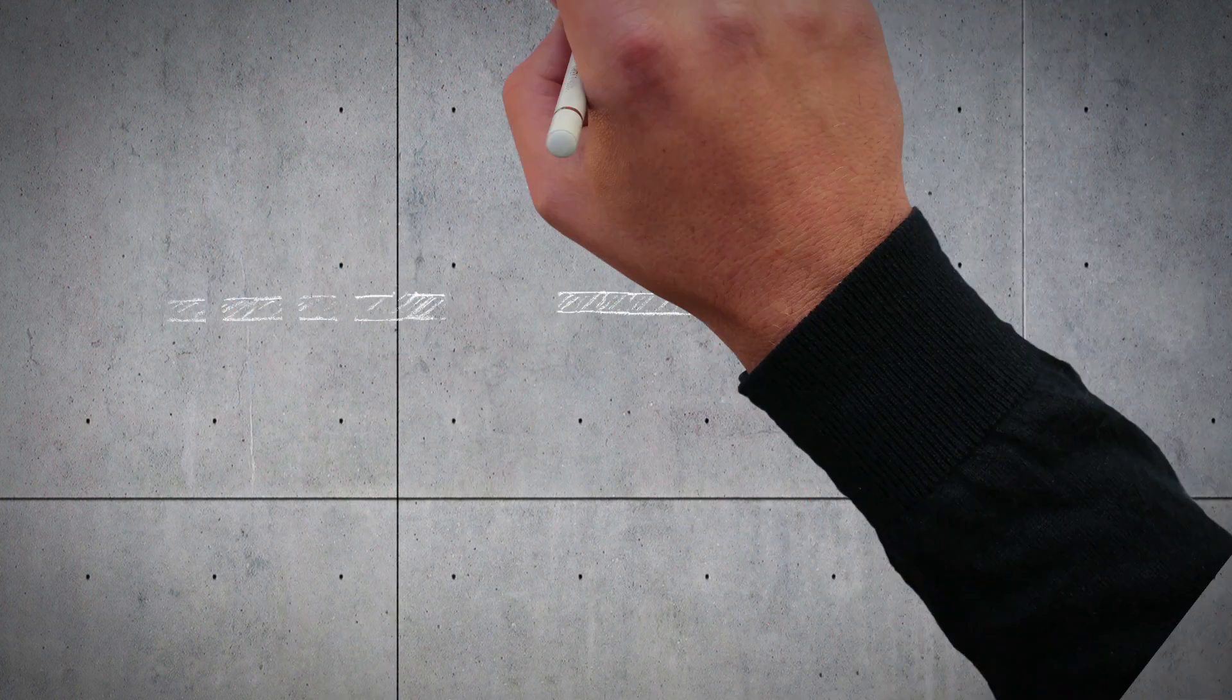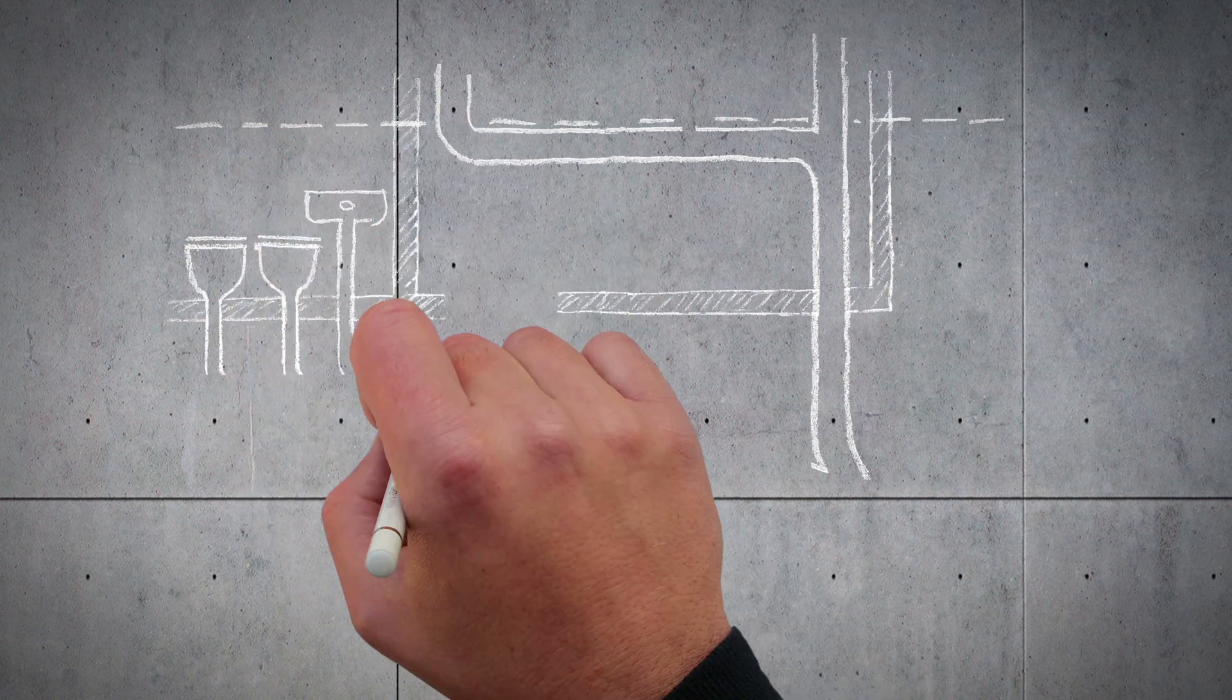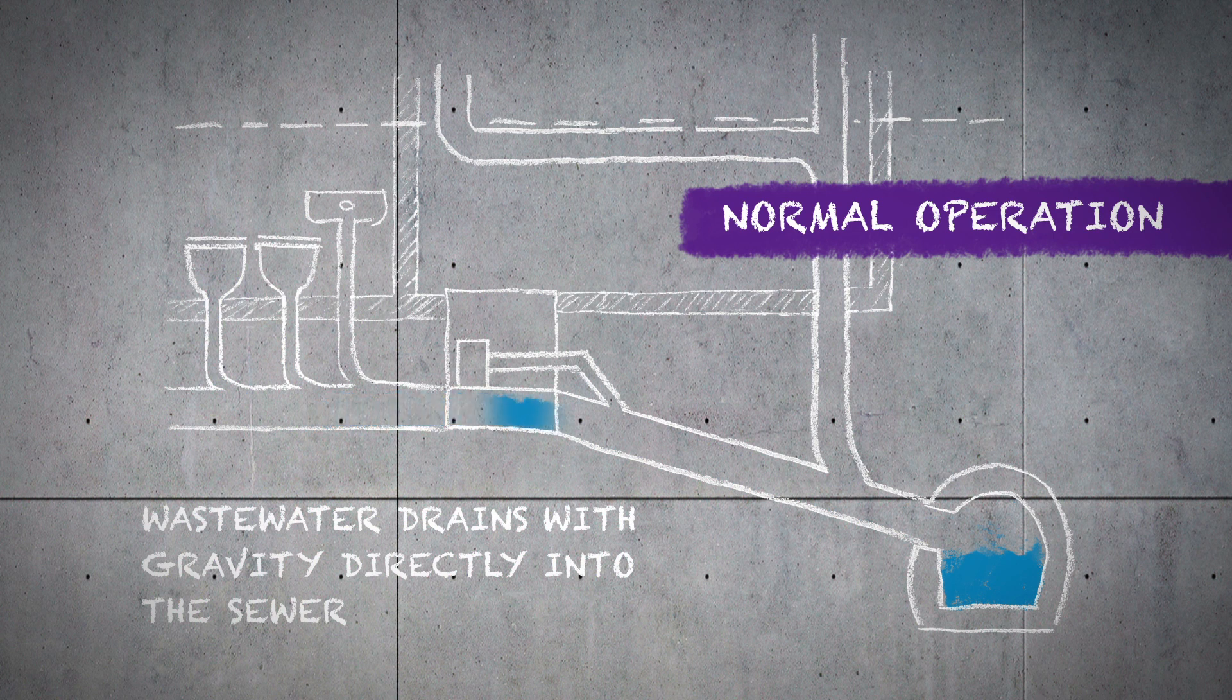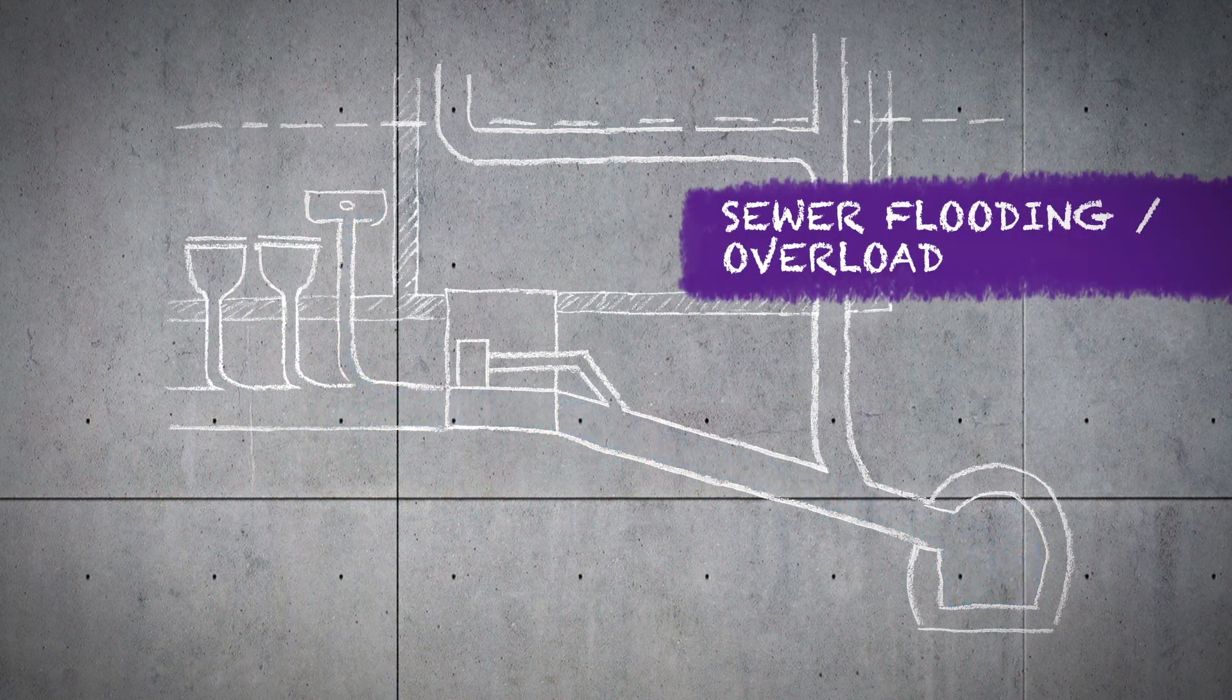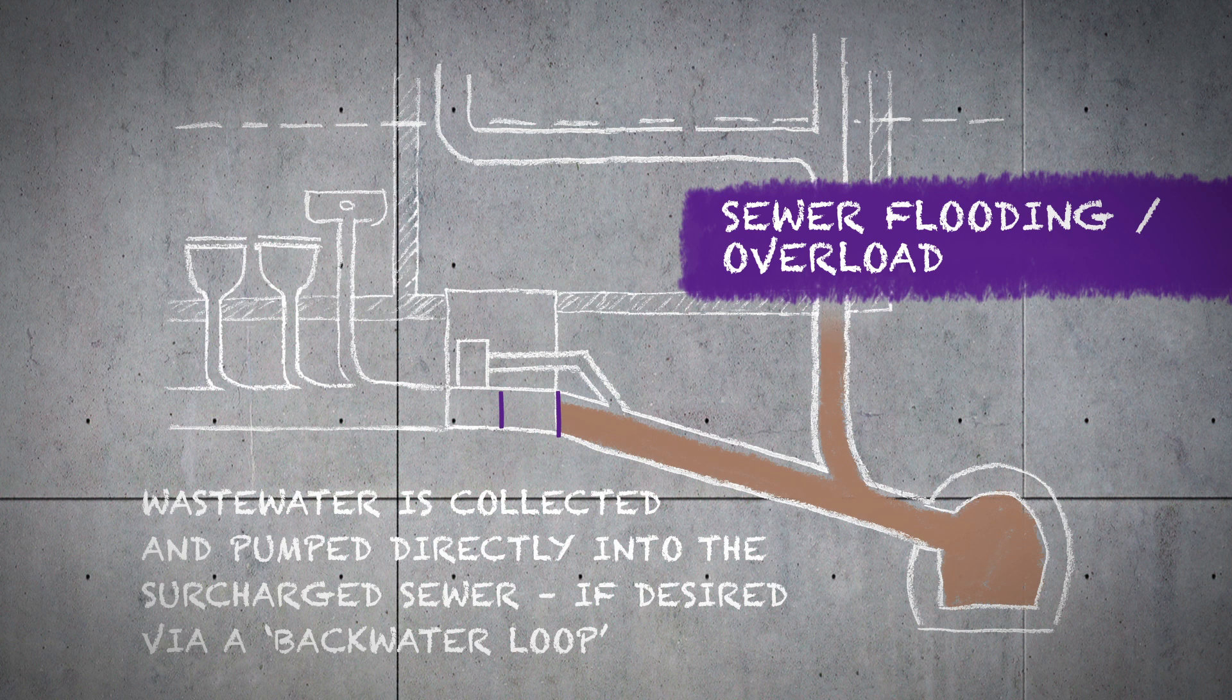Kessel has revolutionized drainage with the Ecolift Hybrid Lifting Station, combining the best of both worlds. Many buildings have gravity wastewater drainage available to the public sewer. The Ecolift uses this natural gravity slope and has made it safe and reliable. The Ecolift Hybrid Lifting Station uses the natural slope to the public sewer and offers the maximum in reliability and protection.